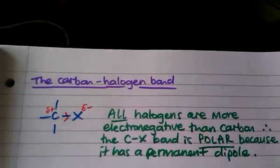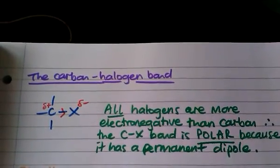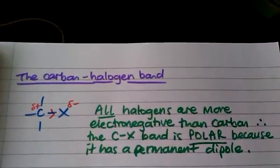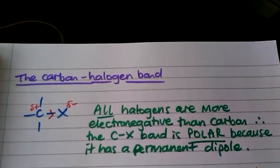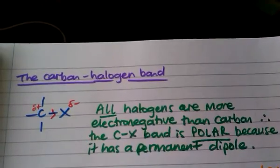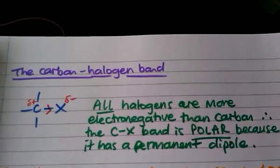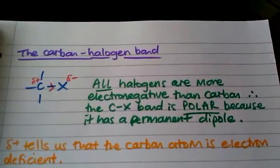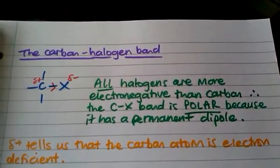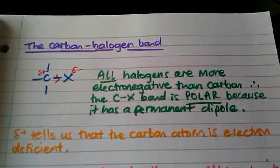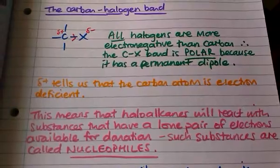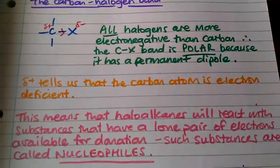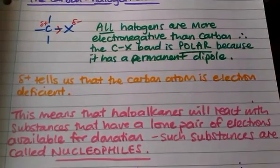The carbon-halogen bond: all halogens are more electronegative than carbon, and so the carbon-halogen bond is polar because we've got a permanent dipole. It just means that the halogen atoms are better at drawing electrons towards themselves than carbon is. The delta positive next to the carbon atom tells us that that atom is electron deficient. And so that means that haloalkanes will react with substances that have a lone pair of electrons that are available for donation.